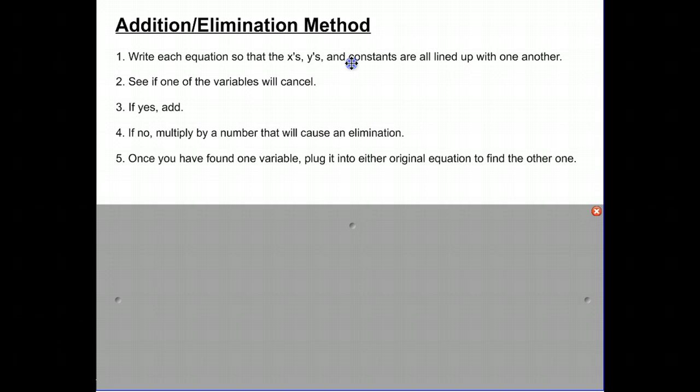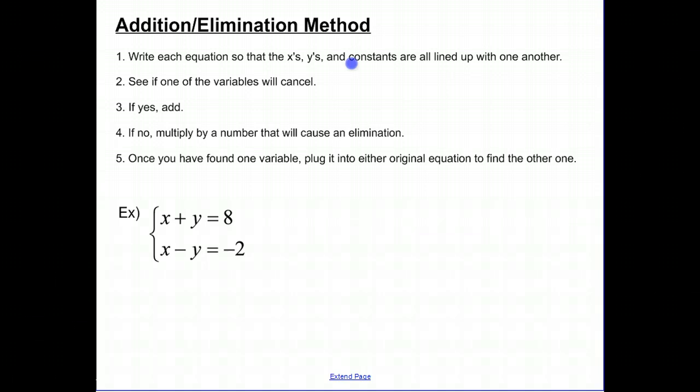It's pretty obvious in graphing since every point is an X and a Y, but in substitution method as well, once we get the X value, we need to find the Y. So let's take a look at a simple example to start. If I have X plus Y equals 8 as my first equation and my second equation X minus Y equals negative 2, we think about the steps we have to do. The first one is to make sure that X, Y, and constants are all lined up. If you look at this, they are. I've got my X's lined up together, my Y's in a straight line down, the equal signs are lined up, my constants are lined up. So step one is taken care of automatically.